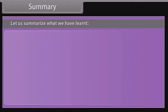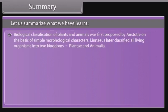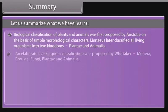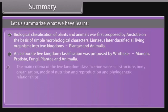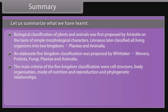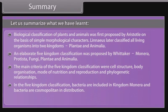Summary: biological classification of plants and animals was first proposed by Aristotle on the basis of simple morphological characters. Linnaeus later classified all living organisms into two kingdoms — Plantae and Animalia. An elaborate five kingdom classification was proposed by Whittaker: Monera, Protista, Fungi, Plantae, and Animalia. The main criteria were cell structure, body organization, mode of nutrition and reproduction, and phylogenetic relationships. In the five kingdom classification, bacteria are included in kingdom Monera and are cosmopolitan in distribution, showing the most extensive metabolic diversity.